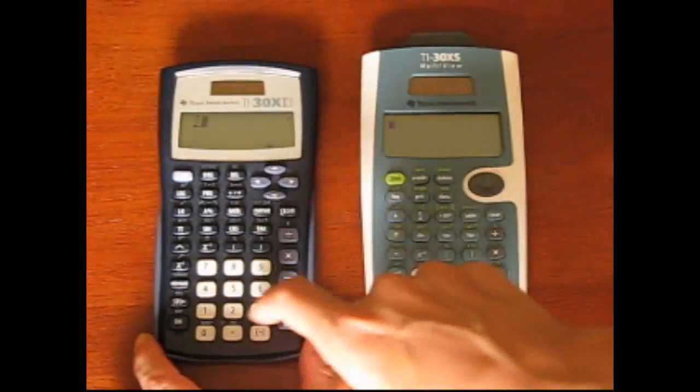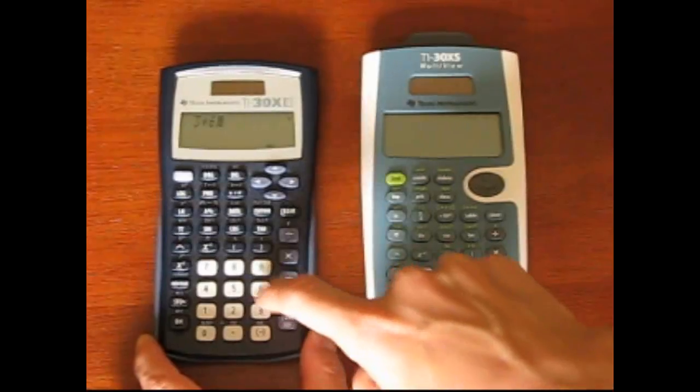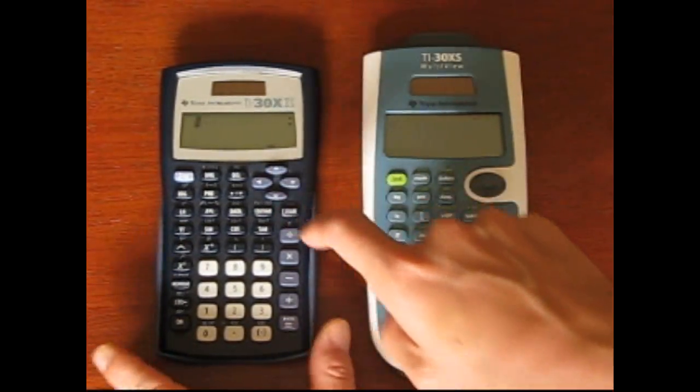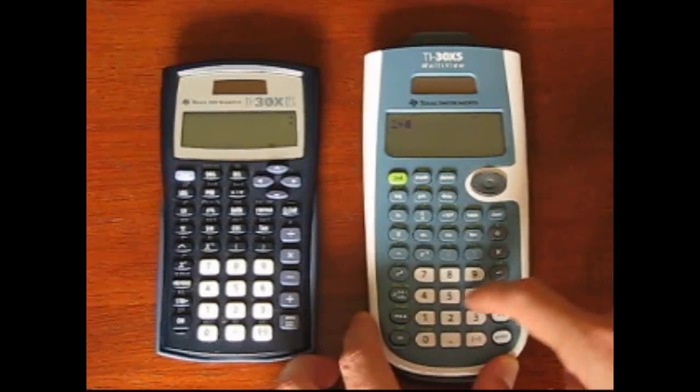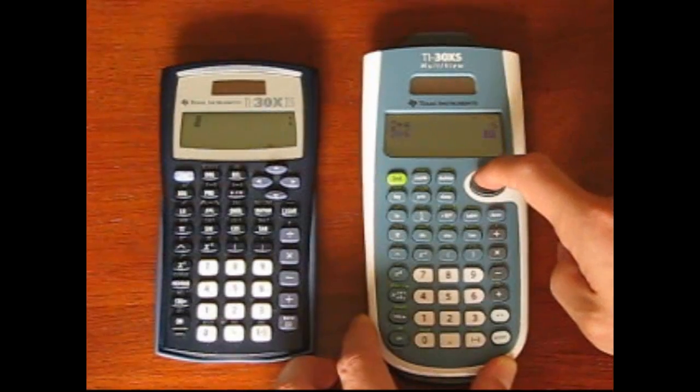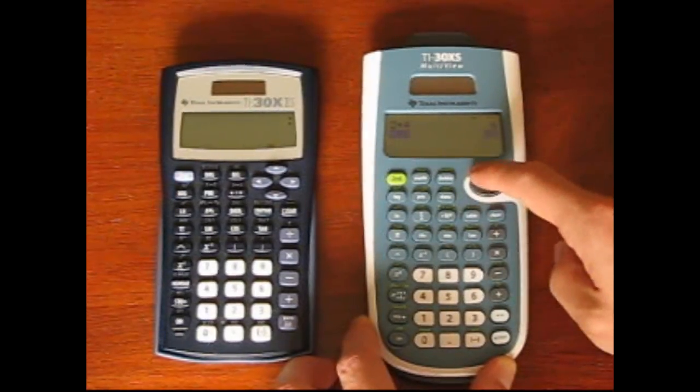Both calculators feature a two-line display, meaning you can see the calculations and answer simultaneously. You can also scroll up to previous answers. However, the Multiview has advanced two-line features that allow it to display up to four equations at one time.